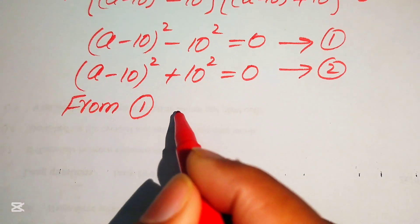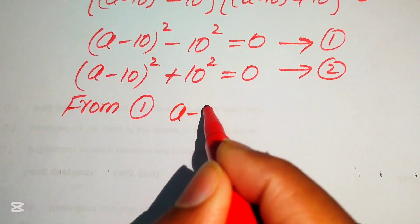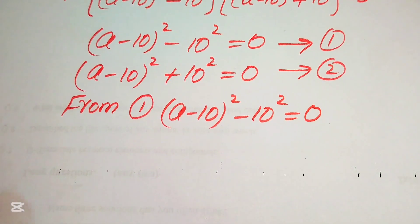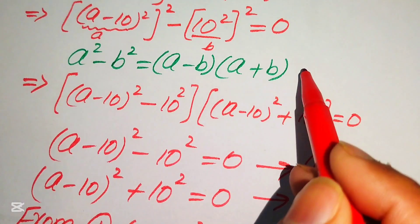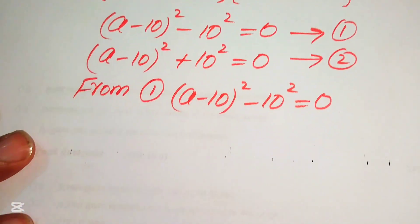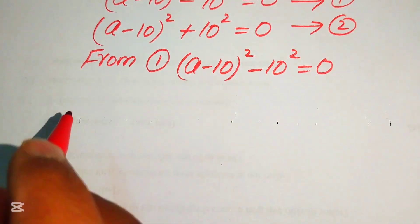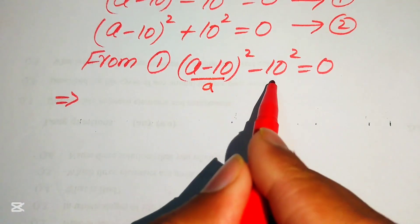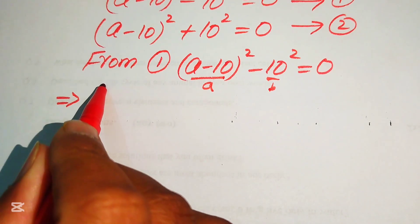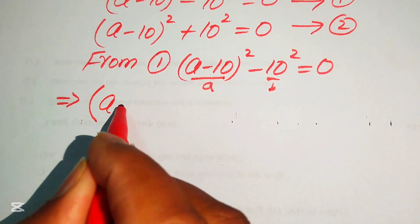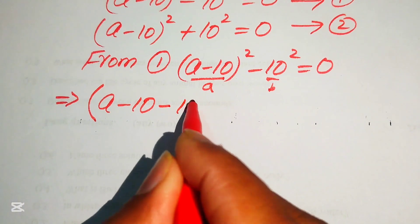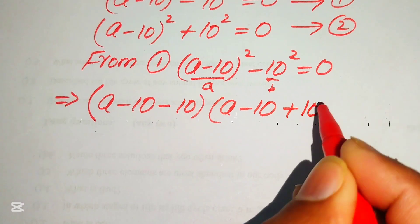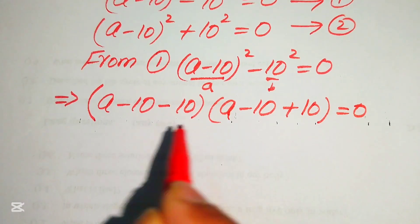Focusing on equation number 1: (a minus 10) squared minus 10 squared equals 0. We again apply the difference of squares formula. Here our a is (a minus 10) and b is 10, so we get [(a minus 10) minus 10] times [(a minus 10) plus 10] equals 0.